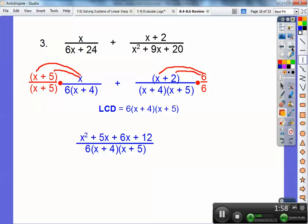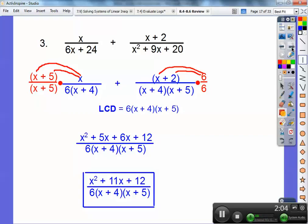Now I'm going to distribute the x through and distribute the 6 through, and I get that mess right there, and then clean it up, and I get that as the final answer. Always leave the denominator factored.